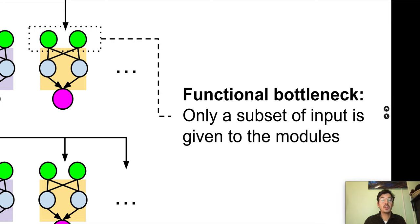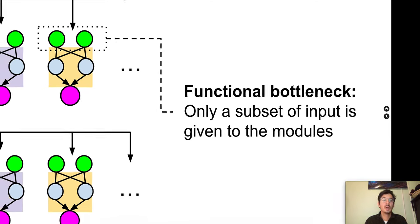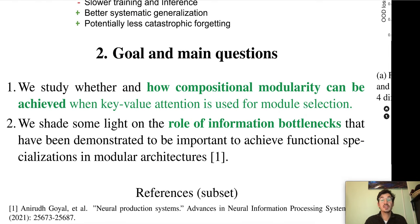Another bottleneck is what we call the functional bottleneck. This bottleneck is achieved by restricting the input to the modules to only a subset of input variables, as opposed to the complete input sample. In this work we study whether effective compositional modularity can be achieved when key-value attention is used for module selection.